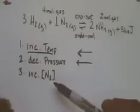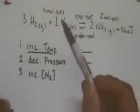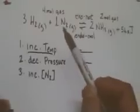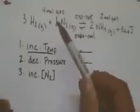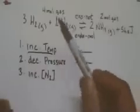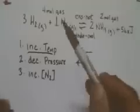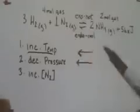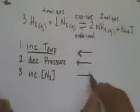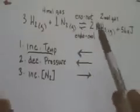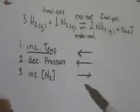Our last stress: an increased concentration of nitrogen. The stress is we're increasing this reactant. The system will shift in such a way as to decrease the concentration of nitrogen — use it up. The forward direction makes ammonia out of nitrogen and hydrogen, so it will use it up. The reverse direction would actually make more nitrogen. So the system will shift to the right. We can generalize: anytime you increase the concentration of any reactant, the system will shift towards the products; anytime you increase the concentration of any product, the system will shift towards the reactants.